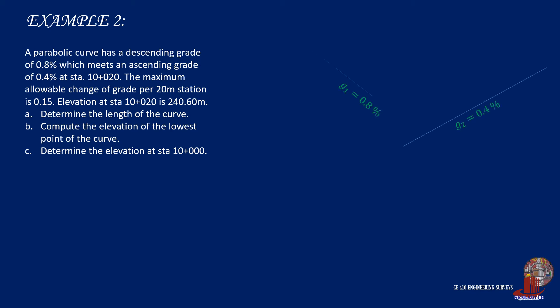Given is a descending grade of 0.8% taken as negative, followed by an ascending grade of 0.4%. The point of vertical intersection is stationed at 10+20 with an elevation of 240.60 meters. The rate of change of the grade is also given at 0.15 per 20 meters. We are required to locate the lowest point and the elevation of the curve at station 10+000.